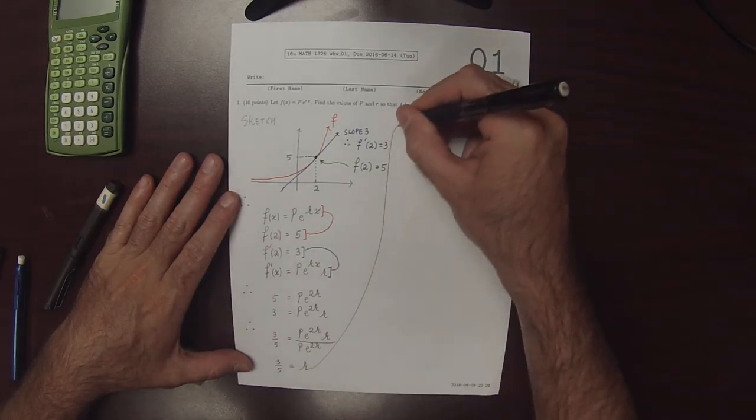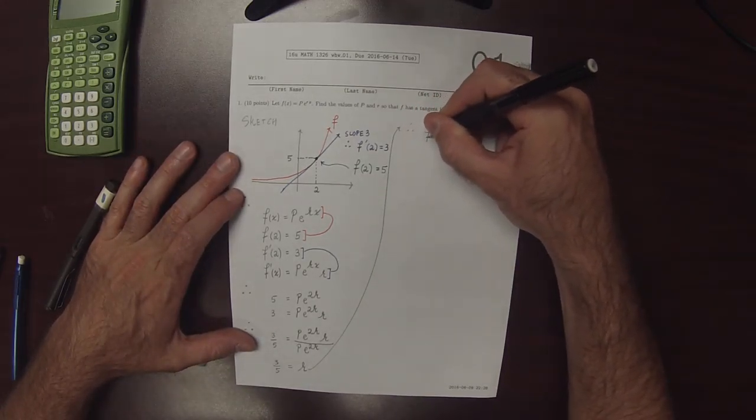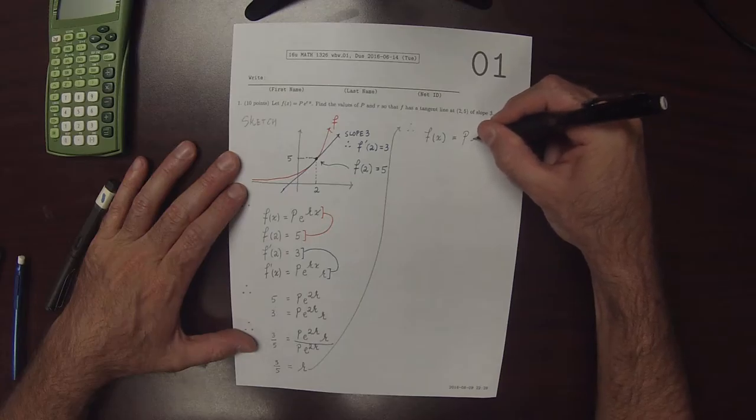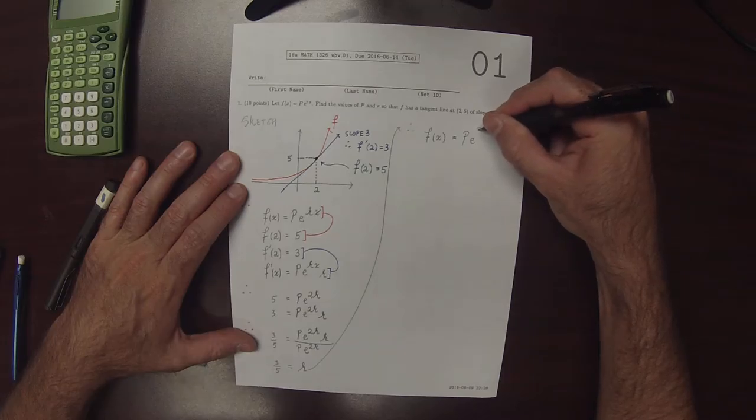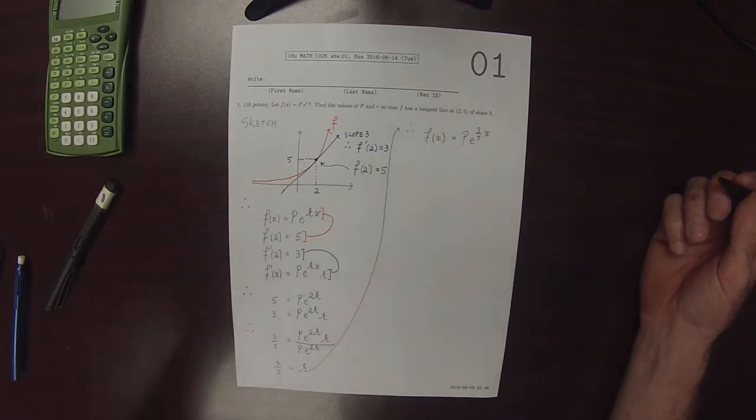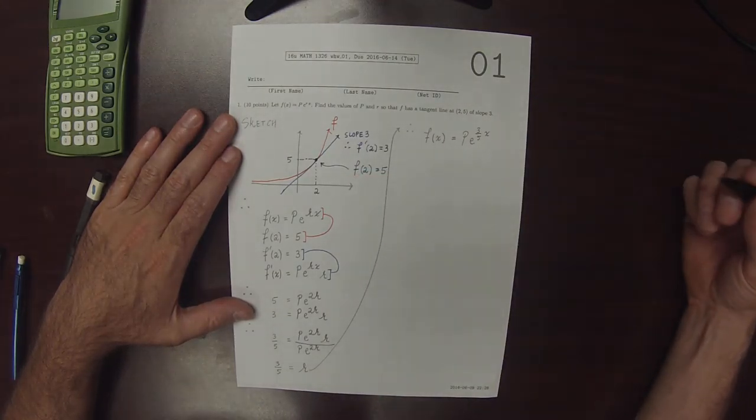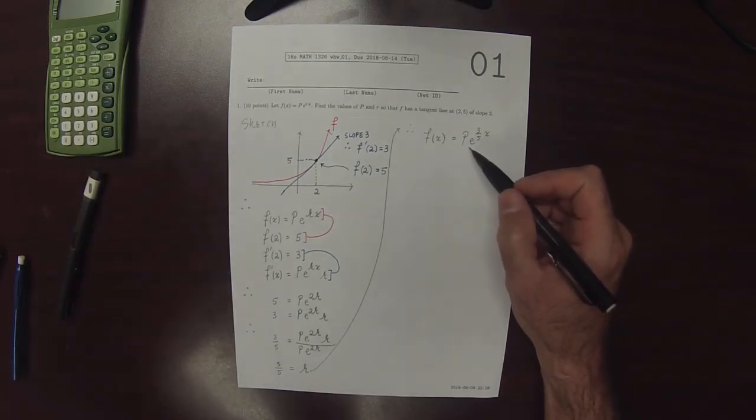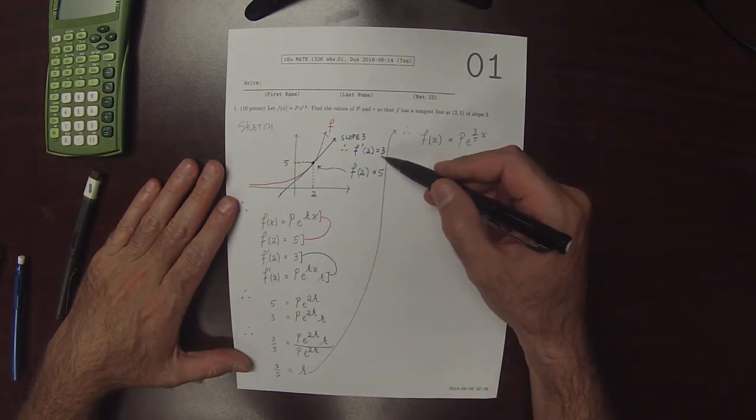As a result, we now know that f of x is p e to 3 fifths x. So we were told to find p and r. We have found r, so we're halfway done. So now, from this position, we can use either one of these pieces of information. So I'll use the green one.